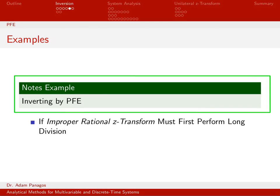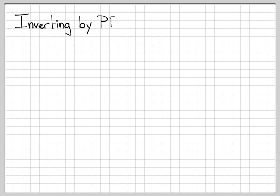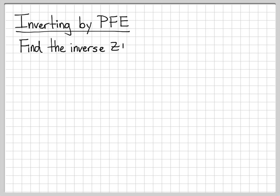We just finished talking about a general approach to how we're going to do inversion from the z domain back to the discrete time domain. Let's go ahead and work through an explicit example of how we use this process to go about inverting by what we call partial fraction expansion. We're going to go from the z domain back to the time domain using partial fraction expansion.